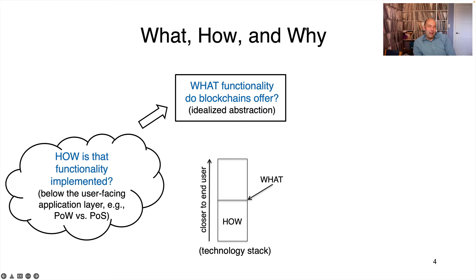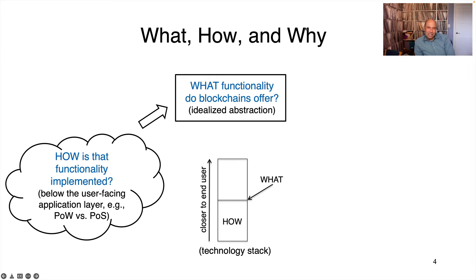As for how: it's all fine and good to write down conceptually some computing functionality you might like to have, but then the question is, is that actually realizable with existing technology? Can you actually build a system that fulfills those promises, and if so, how would you do it? You could ask the how about the internet — these days we all take it for granted — but if you really stop and think about it, enabling near-instantaneous transfer of digital information between any two points on the globe... wow, how on earth could you ever build a system that does that? The answer, of course, is with a lot of super cool computer science.